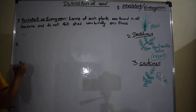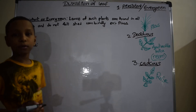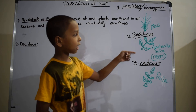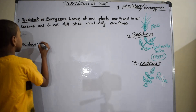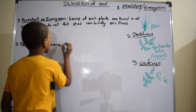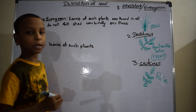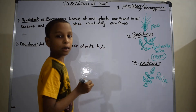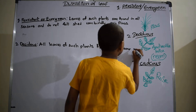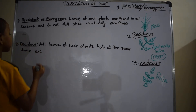Second one is deciduous. All leaves of such plants fall at the same time. For example, Azadirachta indica — Neem.